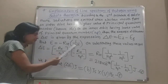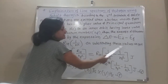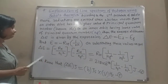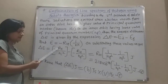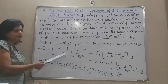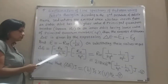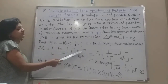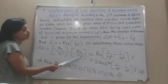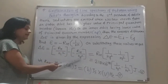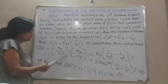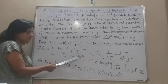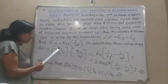On substituting the value of energy into delta E equals Ei minus Ef, we obtain: delta E equals minus RH divided by Ni squared, minus the quantity minus RH divided by Nf squared. On solving, the minus-minus becomes plus, so we get plus RH divided by Nf squared. Taking RH as the common factor, delta E equals RH times the quantity 1 over Nf squared minus 1 over Ni squared.